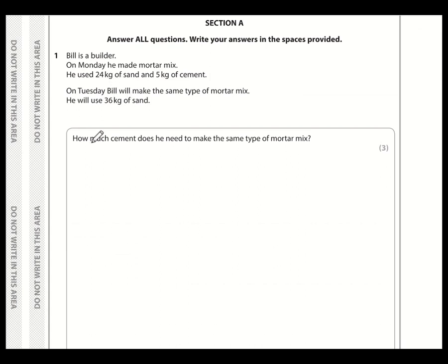Let's take a look at question number one. For this question we know that the ratio of sand to cement is 24 to 5. And Bill has got 36 kilos of sand, so how much cement does he use? If it was 48, that would have been much easier because 48 is double 24, so if he's doubling the sand, he would be doubling the cement. The problem is we don't know exactly how many times greater 36 is than 24.